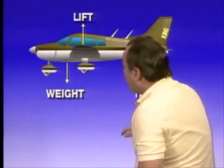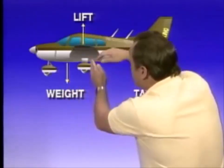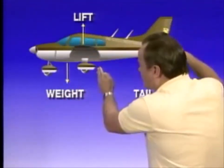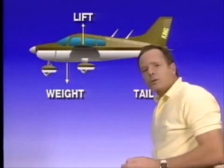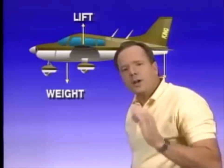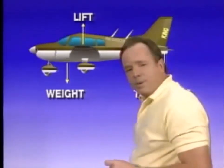The fact that the center of gravity is ahead of the center of lift means that you have to have a down force on the tail, and that down force on the tail makes the airplane stable as far as speed and pitch are concerned.